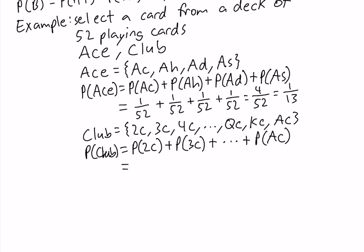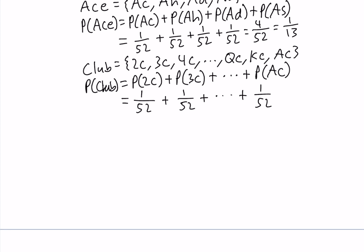Each has a probability of 1/52 since they all have the same chance of being selected. So we sum 1/52 thirteen times: 13 × (1/52) = 13/52, which equals 1/4.